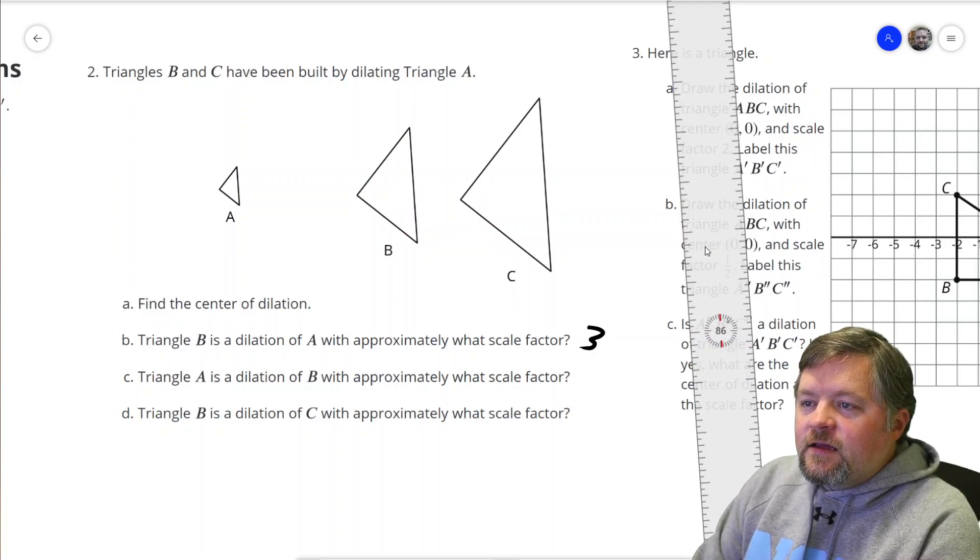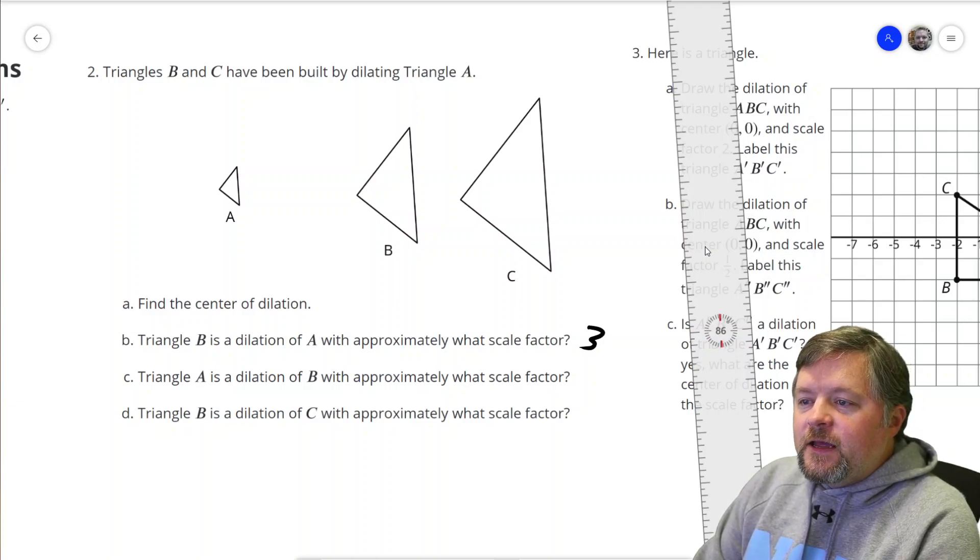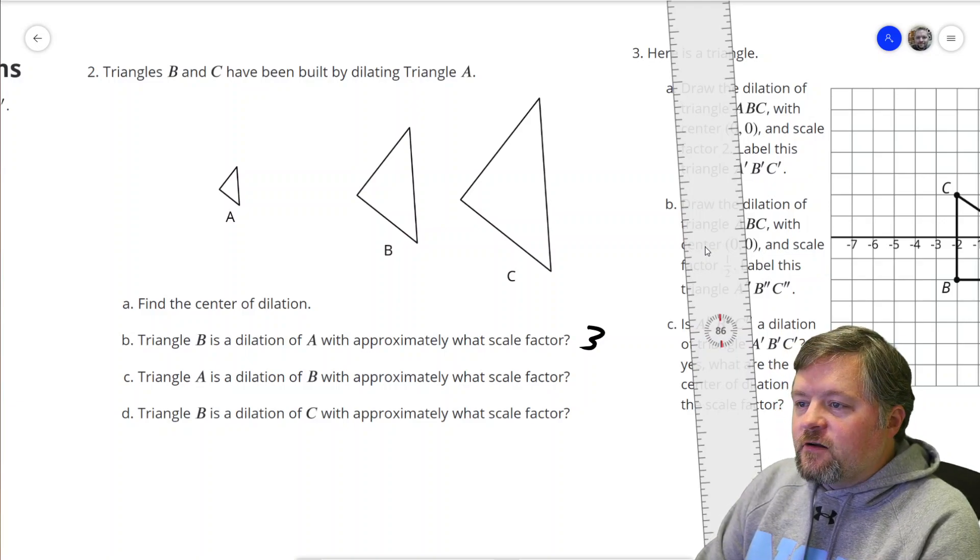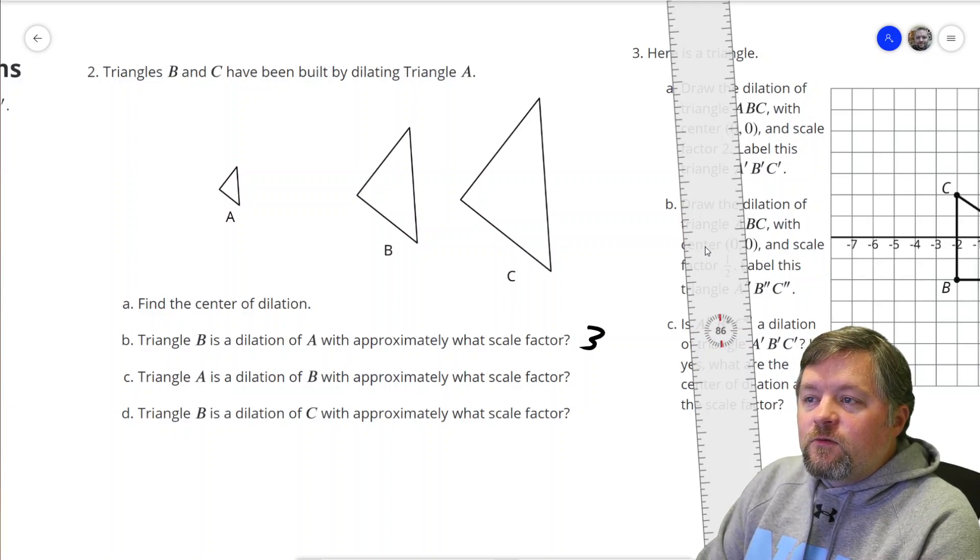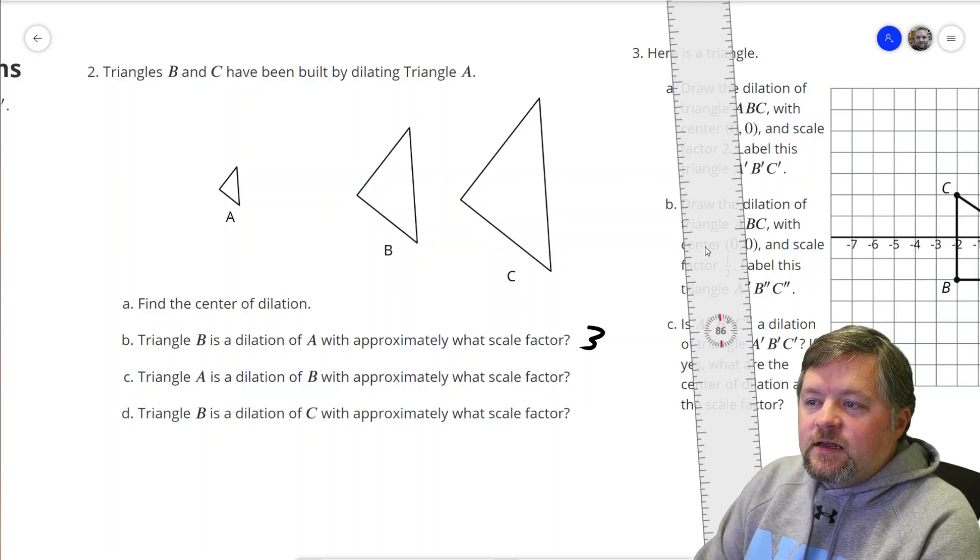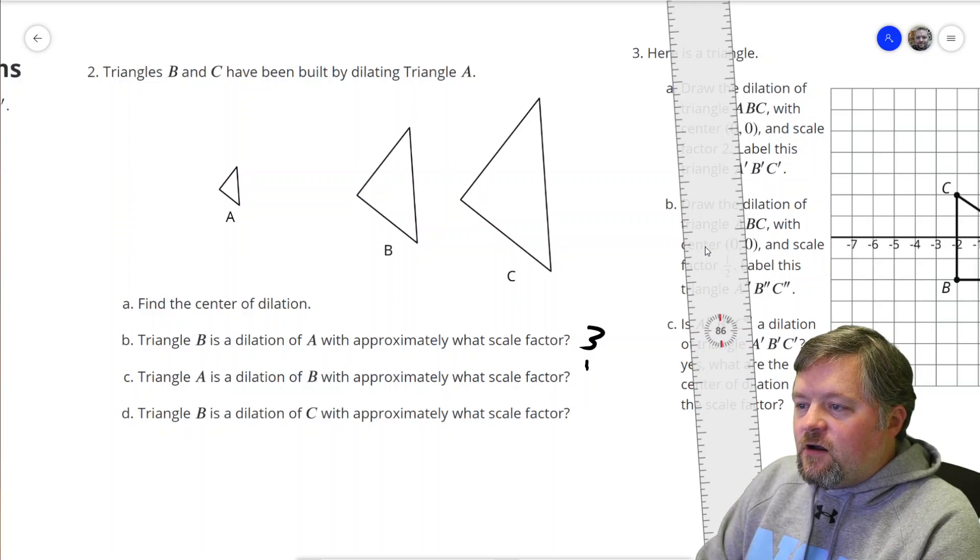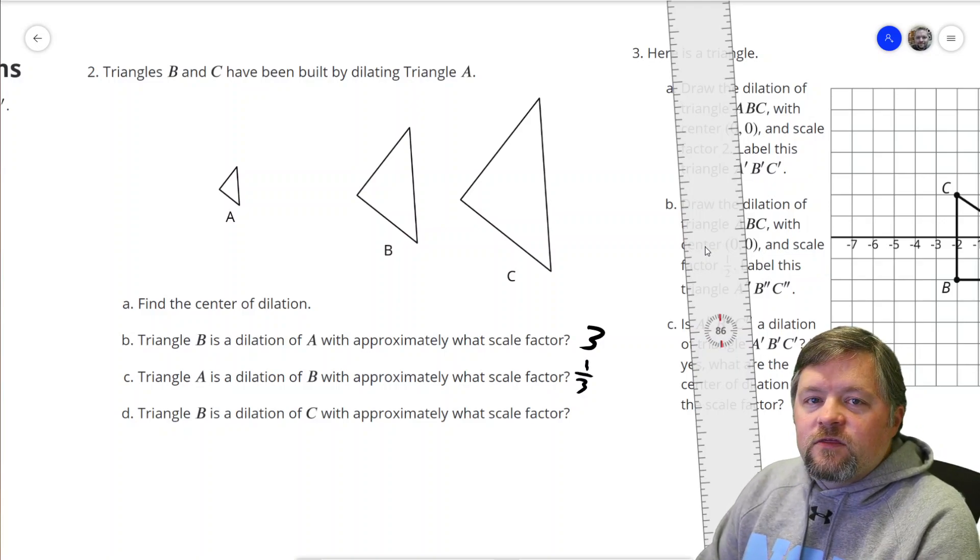A is a scale factor of B. Or A is a dilation of B with what scale factor? Well, what do we do to turn 18 into 6? We have a scale factor of 1/3.